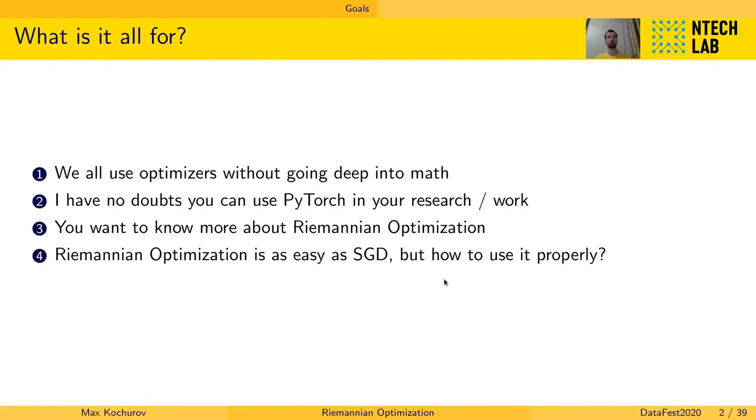So why do you need Riemannian optimization and how you can use it in your work? We all use optimizers like Adam, SGD, AdamW, RMSGrad, whatever, without proper understanding of how they are working. And of course there are some papers that describe the details of the implementation and their open source libraries, but we don't really need to care about how it's working.